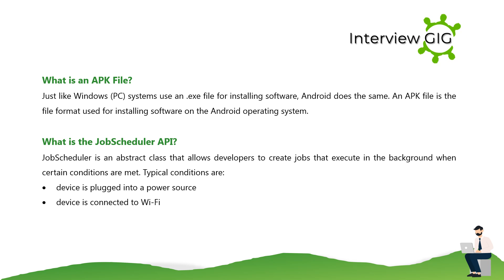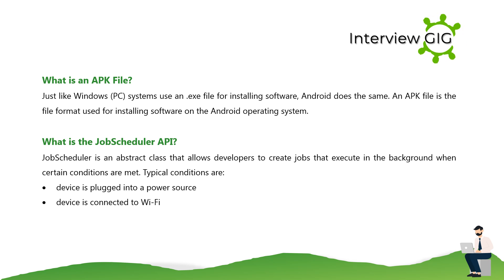What is the Job Scheduler API? Job Scheduler is an abstract class that allows developers to create jobs that execute in the background when certain conditions are met. Typical conditions include the device being plugged into a power source or connected to Wi-Fi.